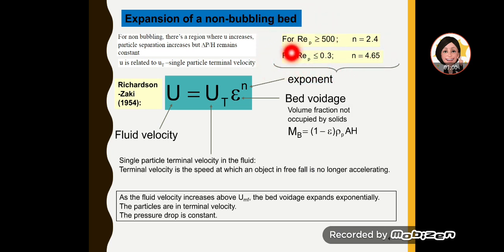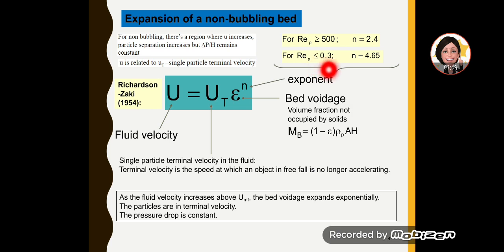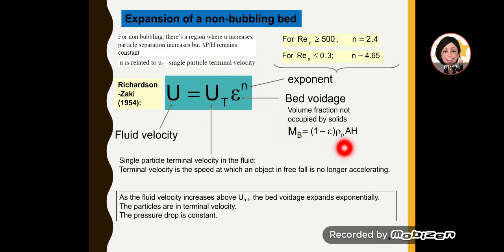If the Reynolds number is greater than 500, n equals 2.4. If the Reynolds number is much smaller, less than 0.3, n equals 4.65. Using this Richardson-Zaki equation, we can estimate the bed expansion of a non-bubbling bed.